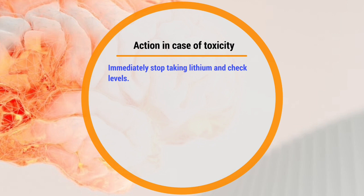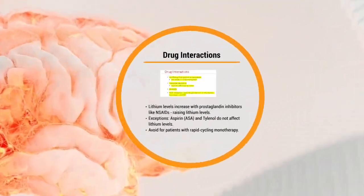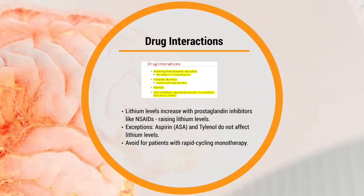So what are the actions in case of toxicity? In case of any toxicity with any drug, the first thing to do is to stop the drug — stop the lithium. Next, check the lab values. That is your priority action.